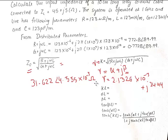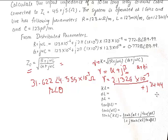Once you have Z naught and gamma, you can identify the real part as alpha. I have written Z naught as 31.622 ∠ 4.555 × 10⁻³ in polar form for convenience, and gamma in rectangular form as a + jb, so the real part equals alpha and the imaginary part equals beta. From this, beta is 24.44, and converting to degrees: beta in degrees equals 24.44 × (180/π).